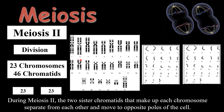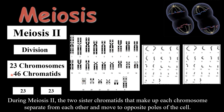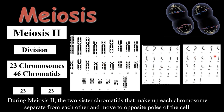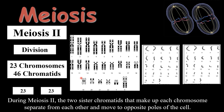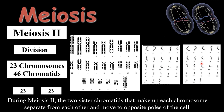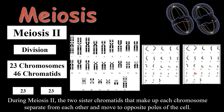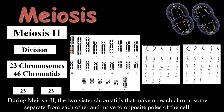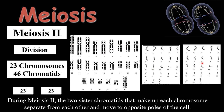Each of the 23 chromosomes contains two sister chromatids, so 23 chromosomes contain a total of 46 chromatids. 23 sister chromatids move to one cell and 23 sister chromatids move to the other cell — resulting in 23 and 23. Since two cells were formed in Meiosis 1, in Meiosis 2 each one gives rise to two daughter cells, resulting in a total of four daughter cells at the end of Meiosis 2, each containing 23 chromosomes.